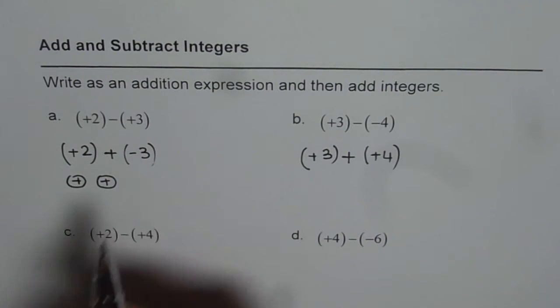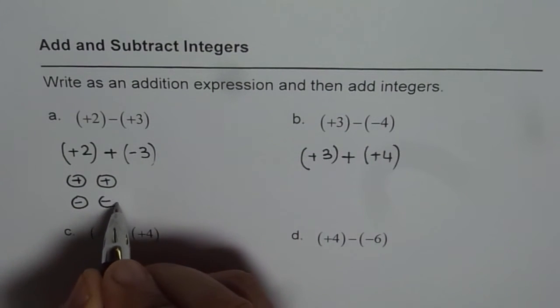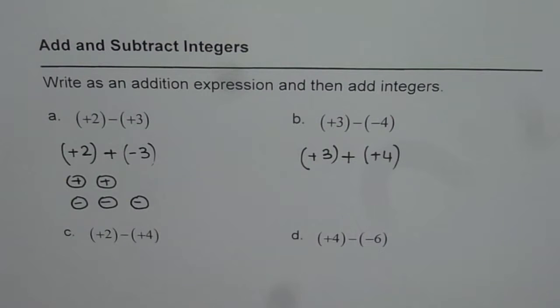Negative 3 means 3 negative counters. So, let me write 3 negative counters. These are my negative counters. So, I write minus sign to show negative counters.